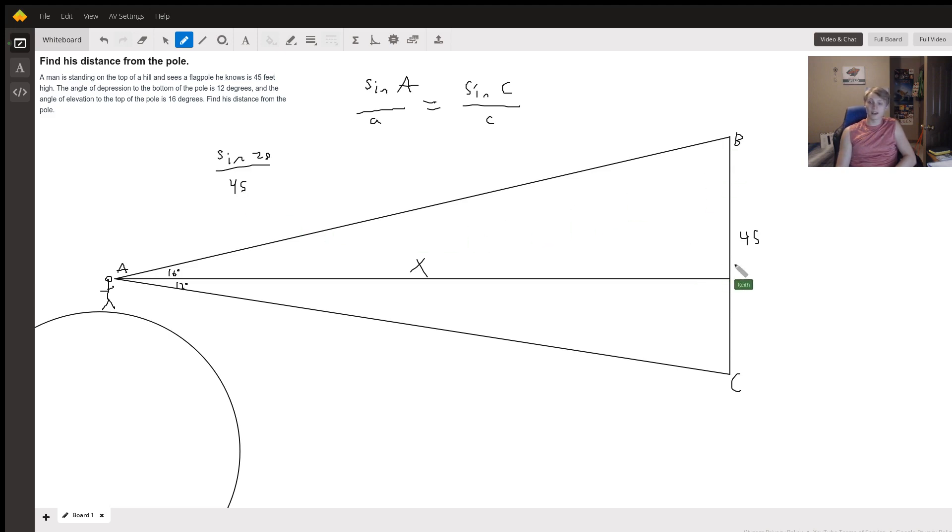Well, we know that this is a right angle since it's a horizontal line meeting up with a vertical line, so this is 90 degrees, which makes angle B equal to 180 minus 90 minus 16, which is 74 degrees.